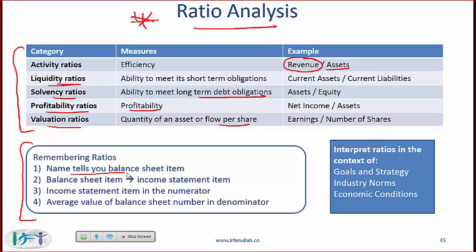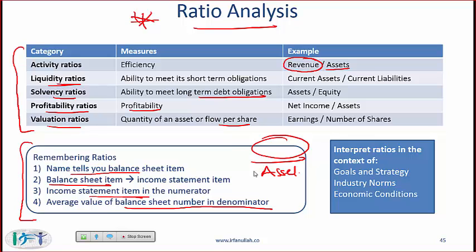The name of the ratio tells you which balance sheet item is part of that ratio. For example, the asset turnover ratio — obviously assets will be in the denominator as the balance sheet item, and the income statement item will be in the numerator. From assets you generate revenue, so the asset turnover ratio is revenue divided by assets. As a general point, ratios need to be interpreted in the context of the goals and strategy of the company, compared with industry standards, and considered in light of economic conditions.